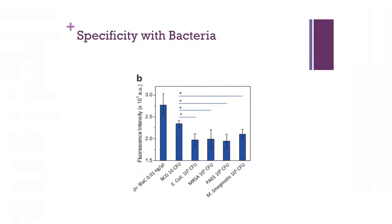We also showed very good specificity detecting BCG, a model of TB complex bacteria — detecting only ten bacteria — compared to ten to the fifth E. coli expressing beta-lactamase (TM1-like), MRSA, and PA01 which expresses three different beta-lactamases at ten to the fifth bacteria. Additionally, Mycobacterium smegmatis, another mycobacterium expressing a beta-lactamase, has a beta-lactamase with closer evolutionary relationship to other bacterial species than to TB complex. So we do not detect other mycobacterial species compared to tuberculosis either.